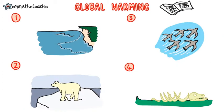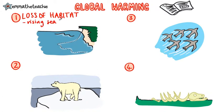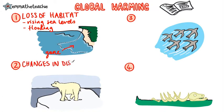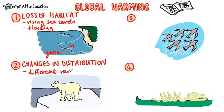Global warming and climate change will have biological consequences — there are four you need to know. First is a loss of habitat: when sea levels rise, it will cause flooding and coastal habitats will disappear. This will also cause a change in the distribution of organisms. For example, grizzly bears will be able to spread further north as it gets warmer, but polar bears' range will shrink as they lose the ice caps.